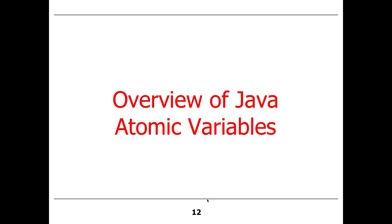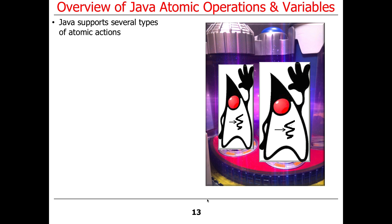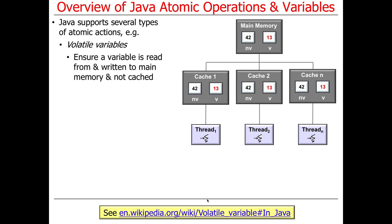Synchronization comes to the rescue for all of that. Now let's talk about atomic variables — this is where we start moving into the next programming assignment. Java supports several types of atomic actions. One type is called a volatile variable. This is interesting because there's also a concept of volatile in C and C++, which is nothing at all like volatile in Java — a common source of confusion.